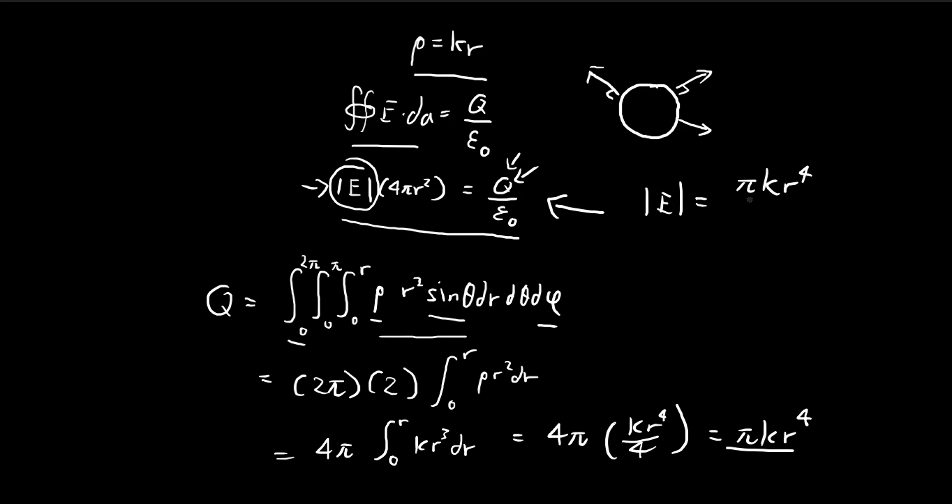π kr to the power of 4, divided by the surface area times epsilon. So we can get rid of the π's. R squared, this reduces this to an R squared. So we're left with kr squared divided by 4 epsilon.